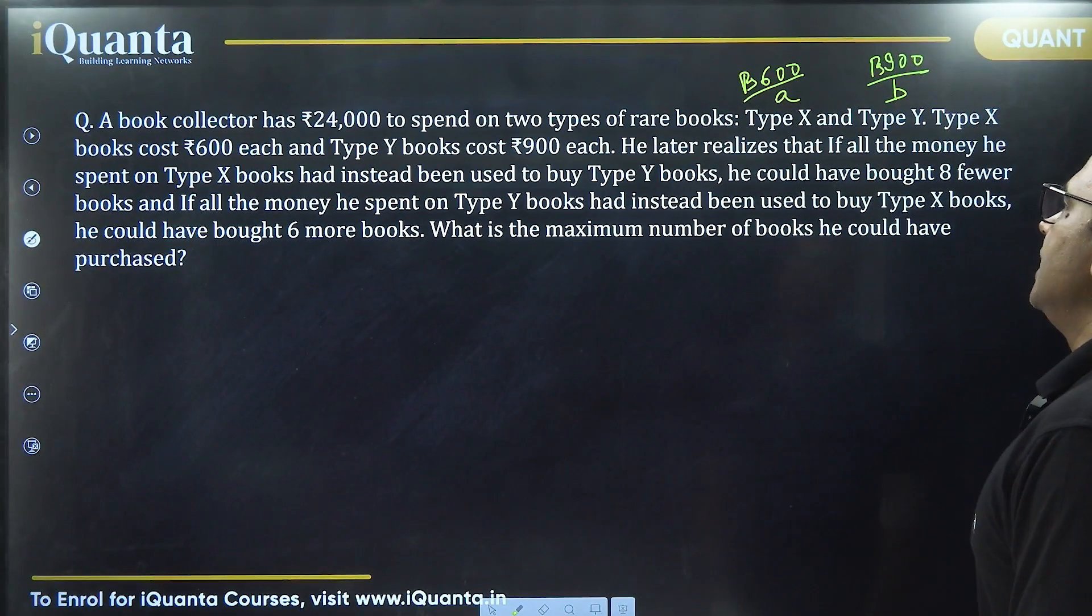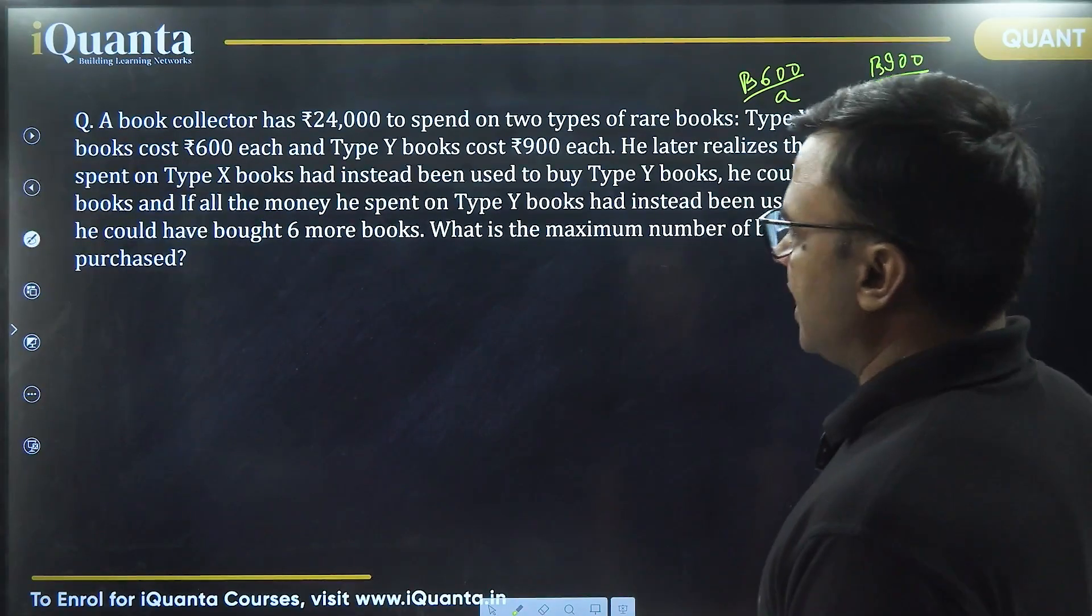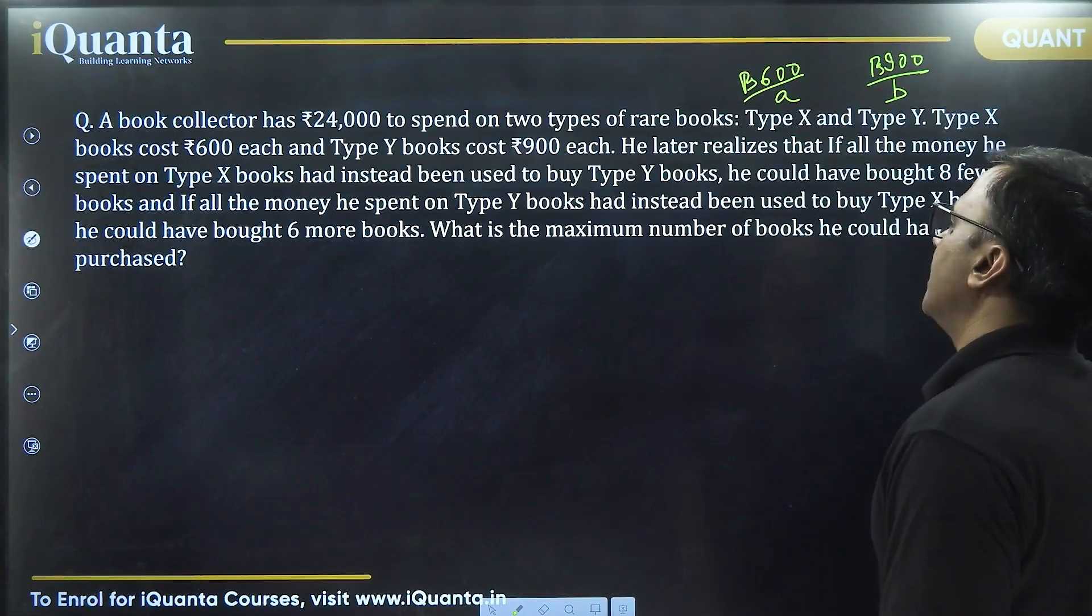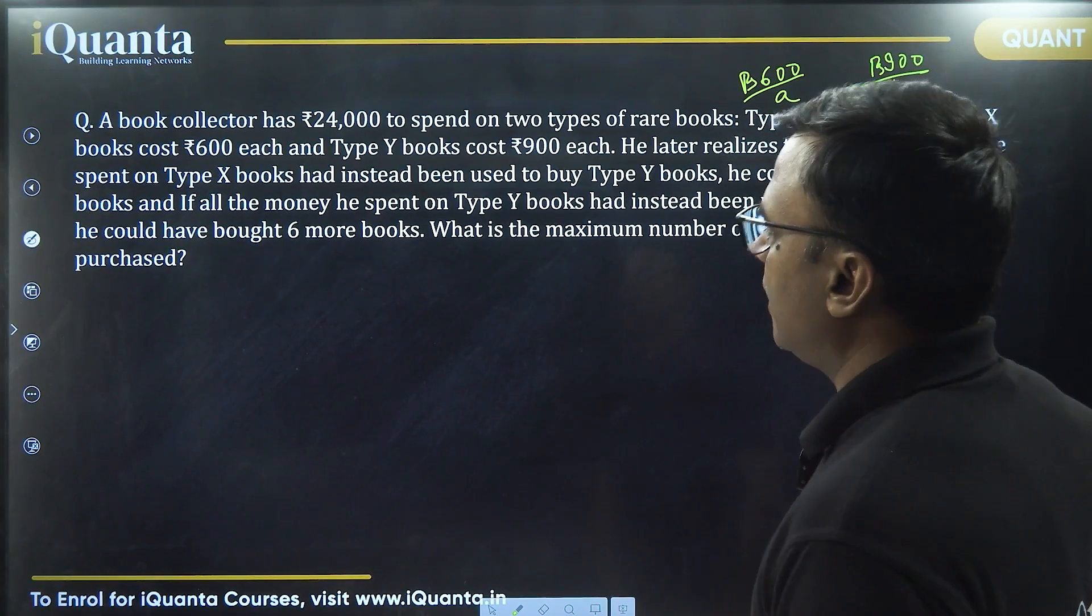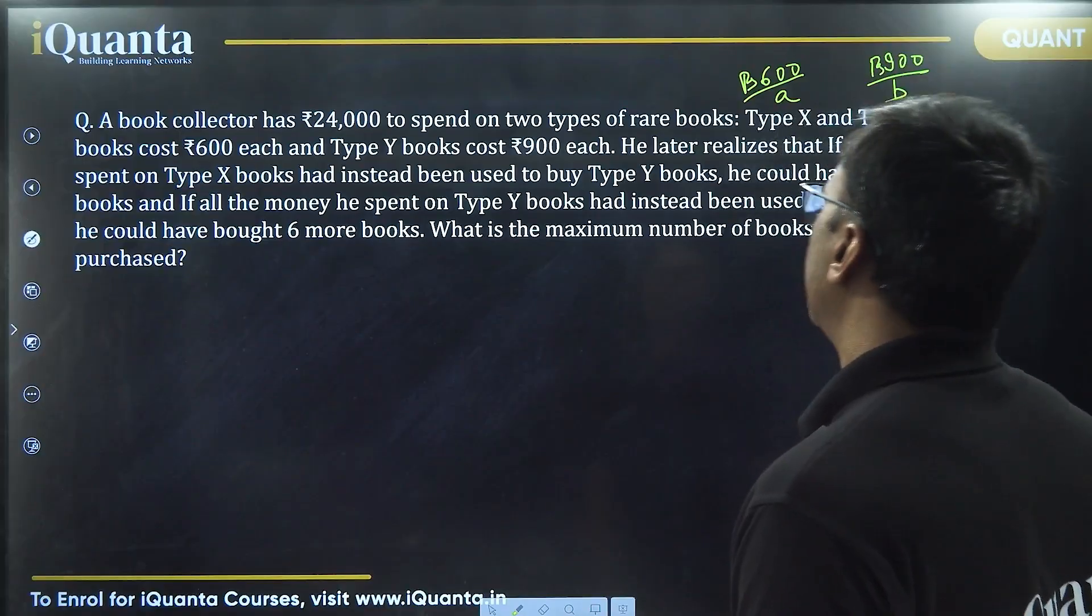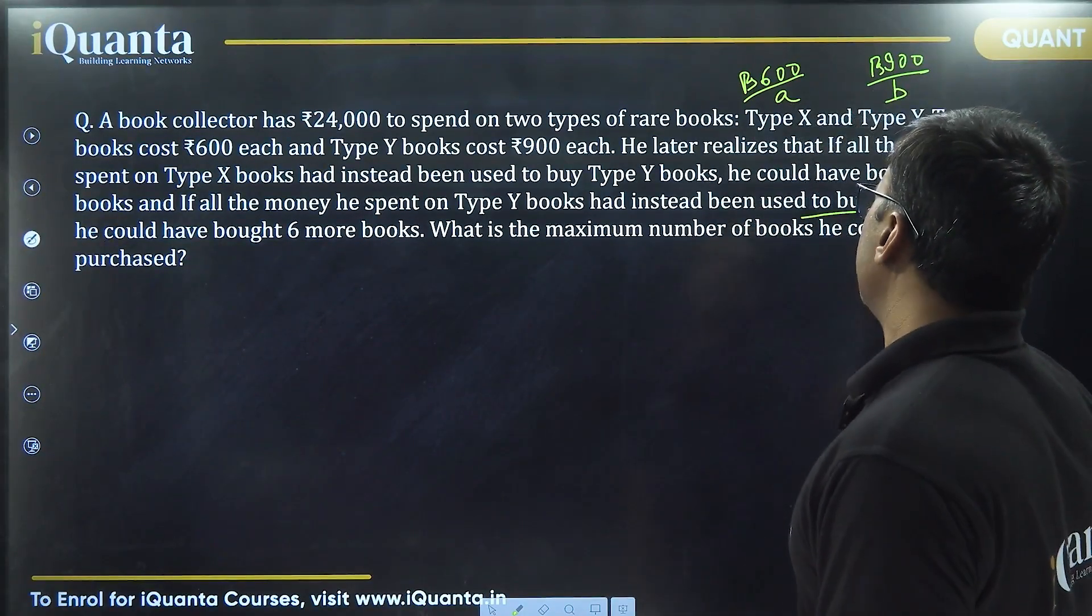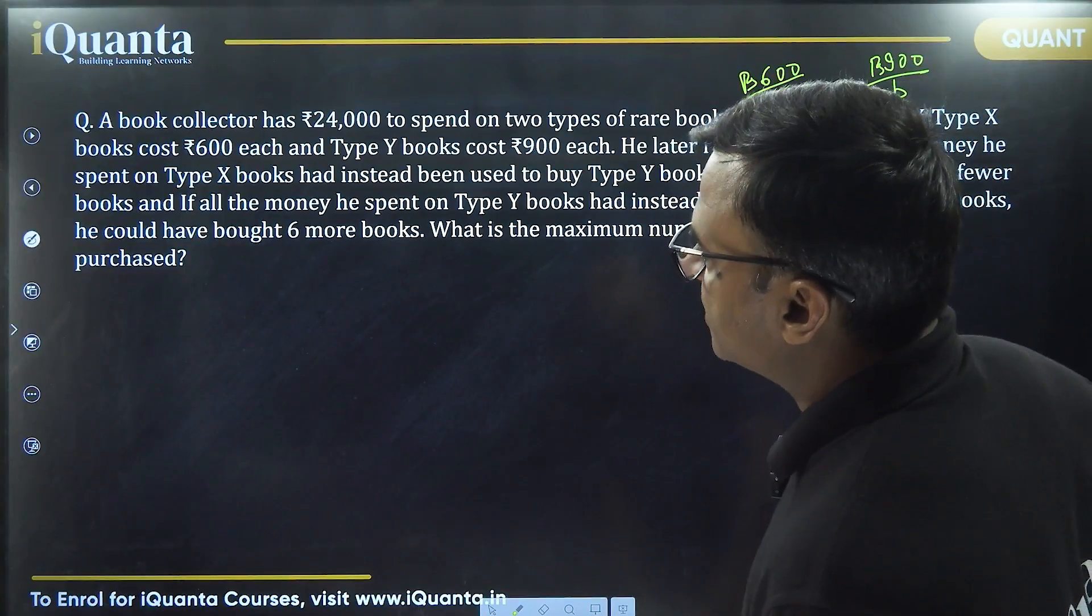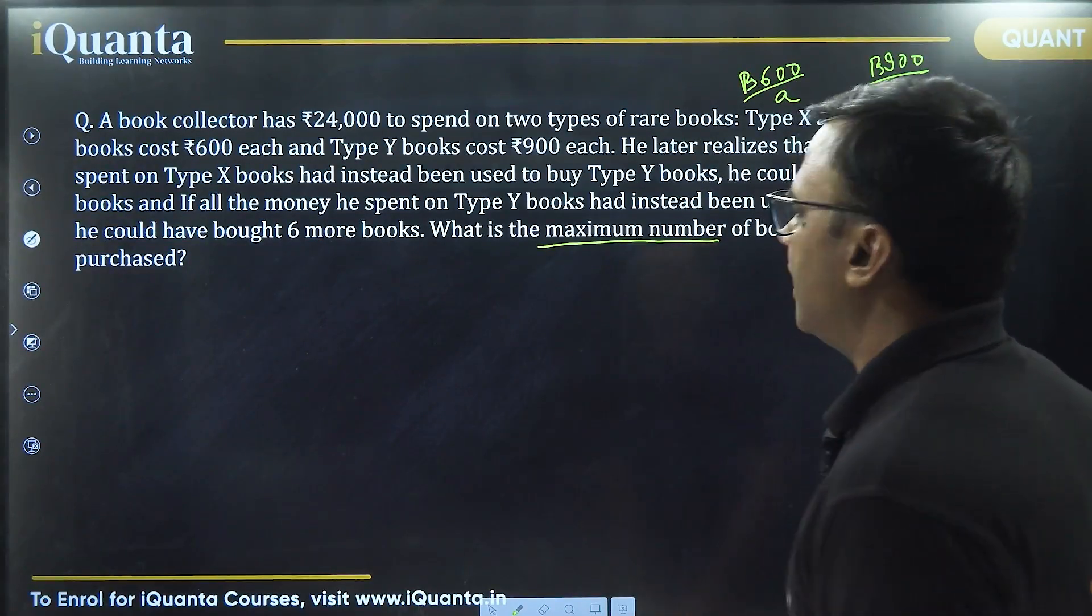He later realizes that if all the money he spent on type X books had instead been used to buy type Y books, he could have bought 8 fewer books. And if all the money he spent on type Y books had instead been used to buy type X books, then he could have bought 6 more books. What is the maximum number of books he could have purchased?